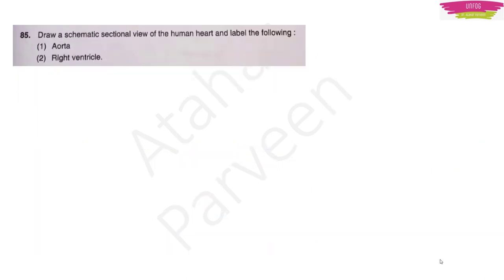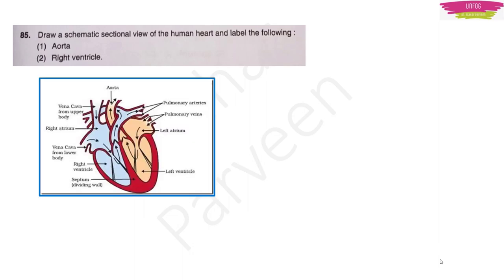Question 85 (4 marks): Draw a schematic sectional view of the human heart and label the aorta and right ventricle. Draw the heart using the fist method as taught in school. Label all parts clearly, particularly the aorta and the right ventricle. If these two are labeled correctly, your four marks are secured.